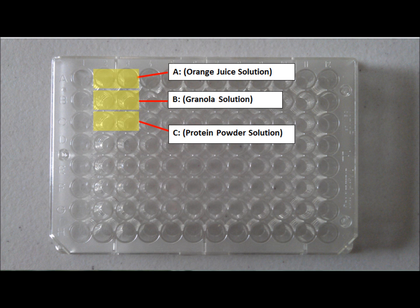In our case, we designated ours in letters. A would stand for OJ, B would stand for granola, and C would stand for protein powder. Solutions A, B, and C are placed in their respective wells, as you can see.